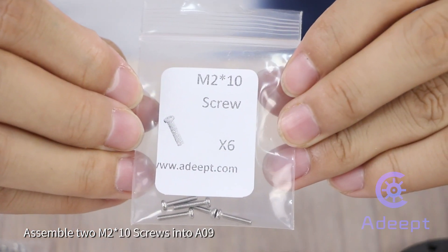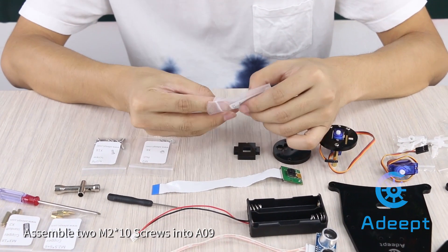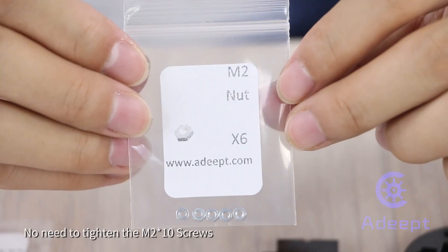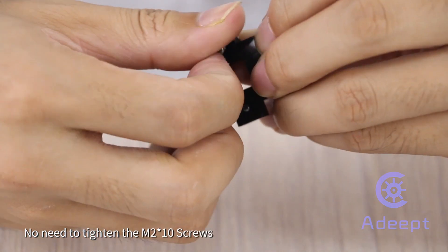Assemble two M2 multiple 10 screws into A09. No need to tighten the M2 multiple 10 screws.